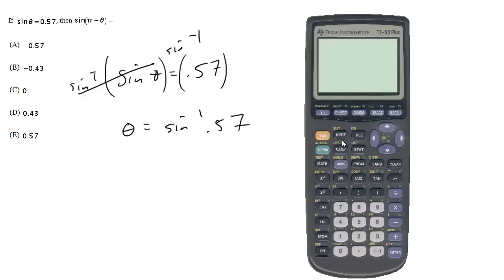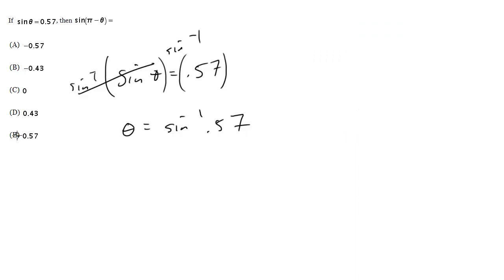So let's do it that way. Make sure we're in radians — we are. So inverse sine of 0.57 gets me that angle. That is my theta. I'm going to plug that into the sine of pi minus that, and I get — what do you know — 0.57. So I get the exact same thing that I started with, which is what we expected. But in this method, you don't need to know anything else besides how to use inverse sine. And if you do, you get the answer pretty easily.